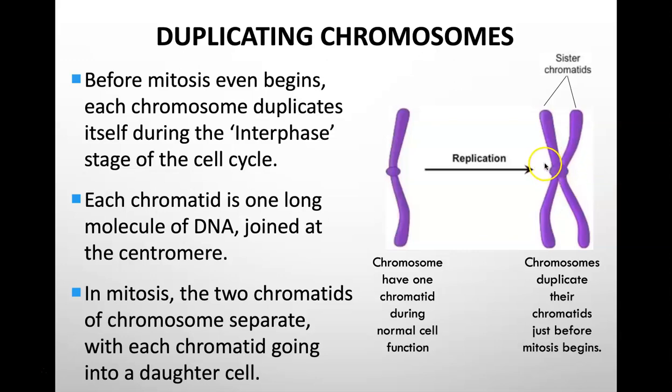And this is where they are, that they're most condensed, these chromosomes. And if you were to stain a cell under a microscope, you might see these chromosomes. So before mitosis even begins, each chromosome duplicates itself during the interphase stage of the cell cycle. Each chromosome is one long molecule with DNA joined at the centromere. So here's one long stretch of DNA molecule. We have the short arm of the DNA molecule here and the long arm. In mitosis, the two chromatids separate with each chromatid going into a daughter cell.